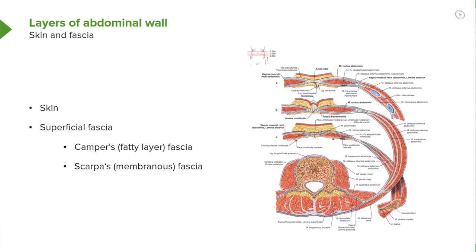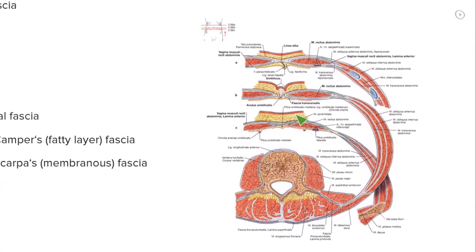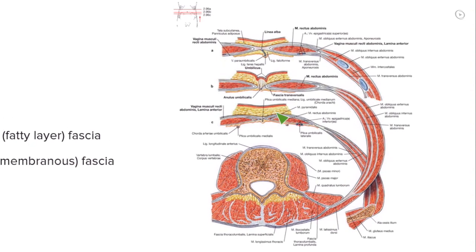The more superficial component of the fascia is this area here, shown in yellow. This is Camper's fascia, also referred to as the fatty layer. The amount of adipose tissue is variable; it will depend on the nutritional status of the individual.